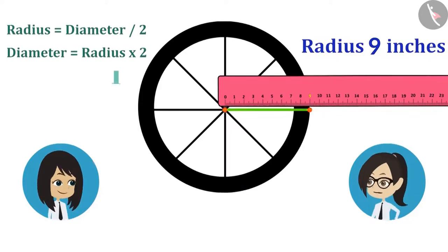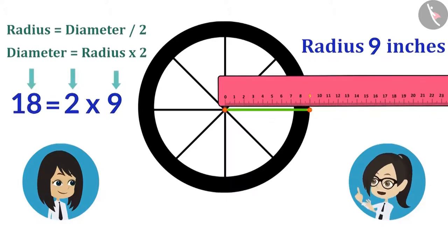Yes. The radius is 9 inches and multiplied by 2, it will be 18 inches. This means that the diameter of the wheel of our bicycle is 18 inches.